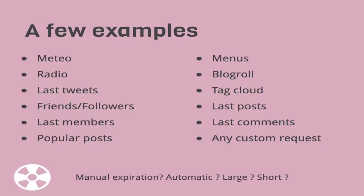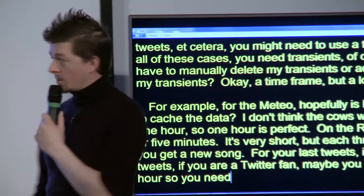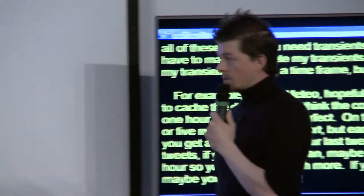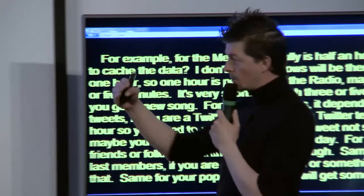For example, for the weather, half an hour or an hour is enough to cache the data. For the radio, maybe three or five minutes - each three or five minutes you get a new song. For your last tweets, it depends on how much you tweet - if you're a Twitter fan tweeting ten times per hour you need to refresh more; if you tweet once a day, that's enough. You'll reduce the external request calls. For your friends or followers, one day is enough. Same for your last members if you're running a forum, and for your popular posts.